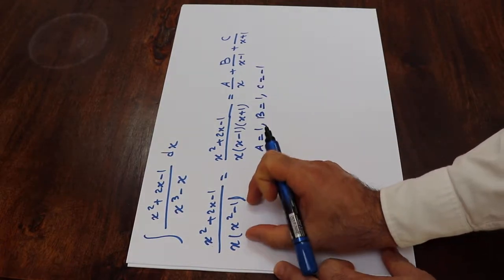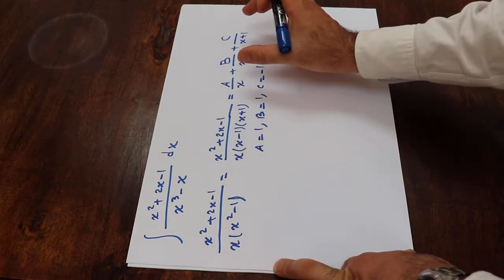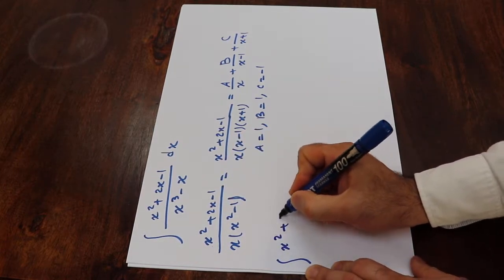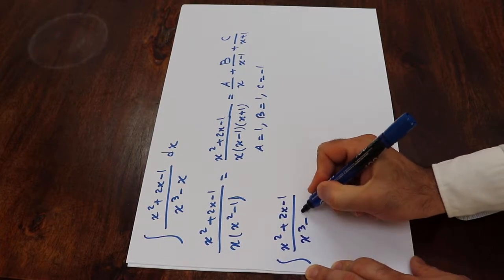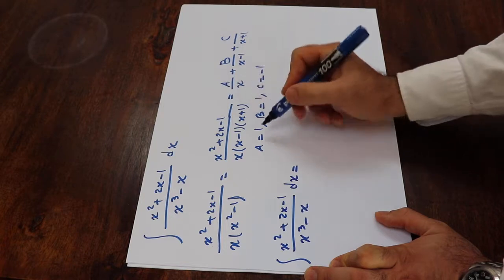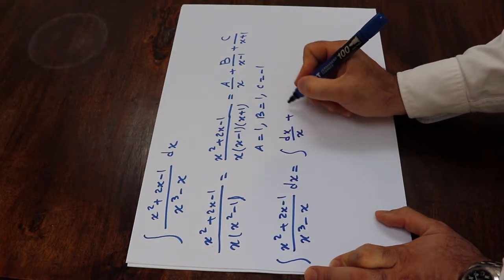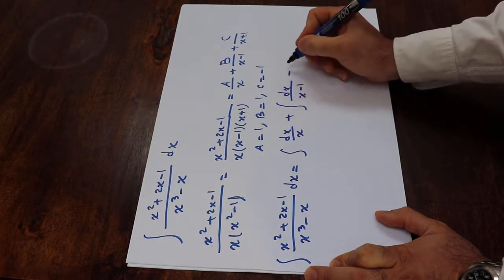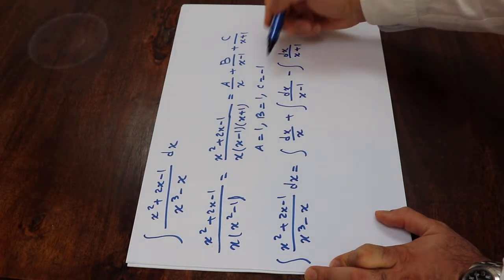So therefore, this integral, the integral of this term will be equal to the integral of this term. In other words, the integral of x² plus 2x minus 1 divided by x³ minus x dx will be equal to integral of dx over x plus integral of dx over x minus 1 minus integral of dx over x plus 1, because C was equal to -1.